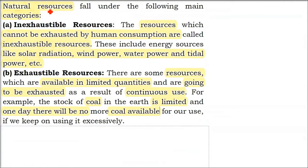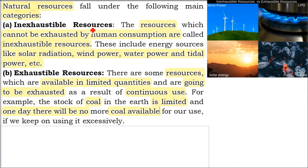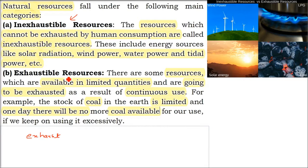Natural resources come from our mother earth and we can divide them into various categories. For example, inexhaustible resources and exhaustible resources. Exhaust means it will finish. Inexhaustible resources are those which will never be exhausted, and exhaustible resources means that in due course of time they will get exhausted or finished.